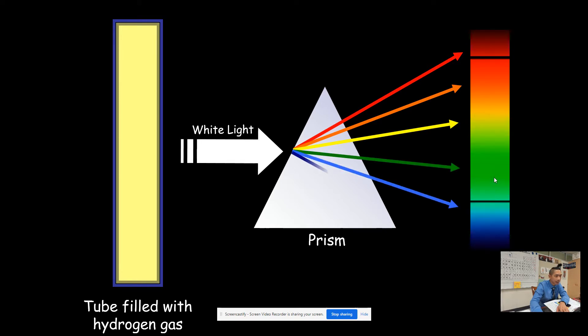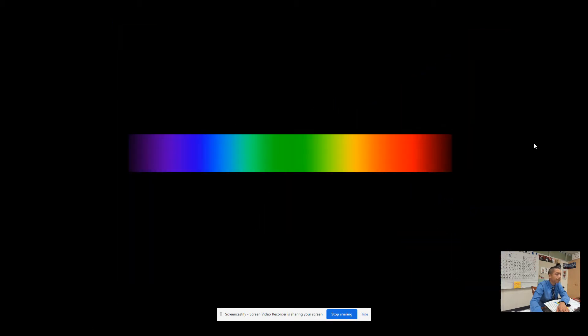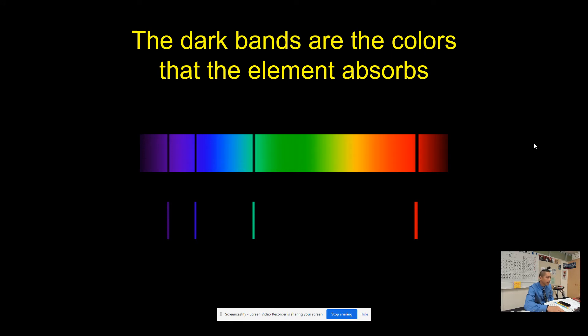You're going to see the same thing, except you'll see these lines instead. What are these lines? These dark bands are the colors that the element, in this case hydrogen, absorbs.